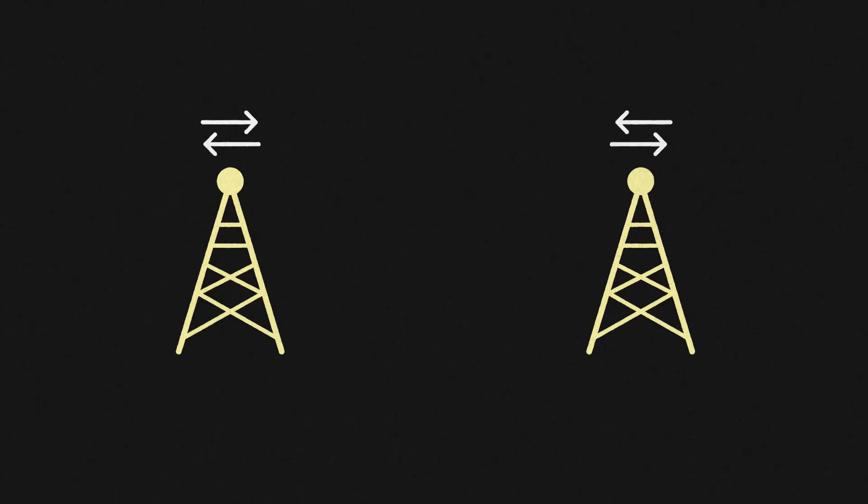A telecom circuit consists of two stations, think cell towers or radio stations. Each station has a transmitter and a receiver, sometimes combined into a transceiver.